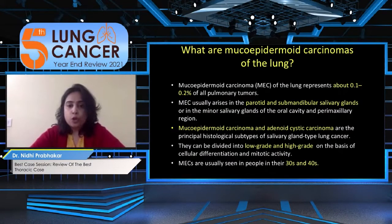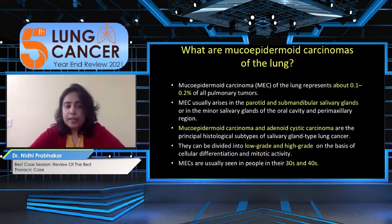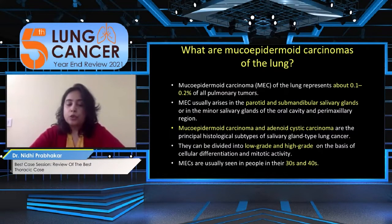Briefly on mucoepidermoid carcinoma of the lung: there are two main types of salivary gland-type tumors — mucoepidermoid carcinoma and adenoid cystic carcinoma — and each can be low grade or high grade.